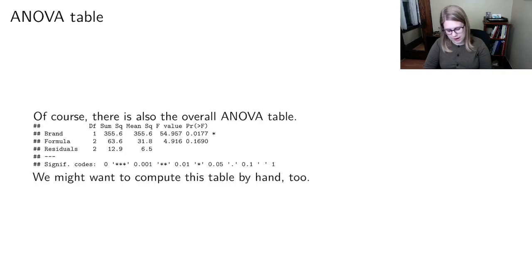And again, we're asking are those tau's, any of those tau's different from zero and any of those beta's different from zero? So it looks like we can reject the null that those tau's are different from zero, but we can't reject the null that those betas are different from zero.